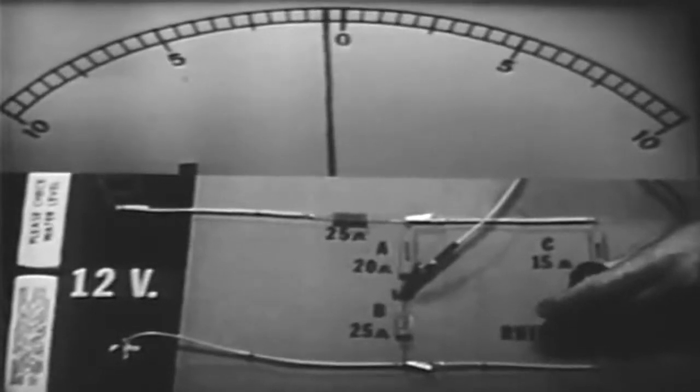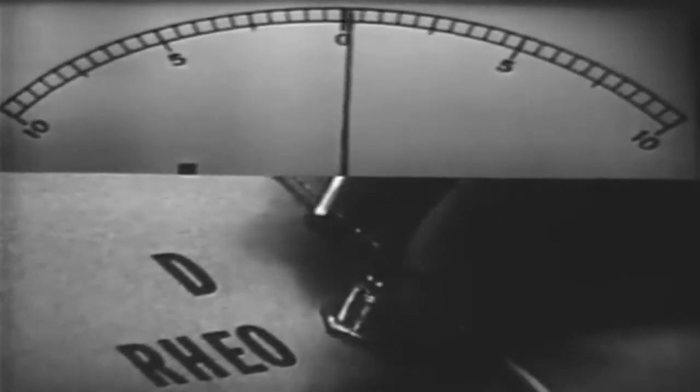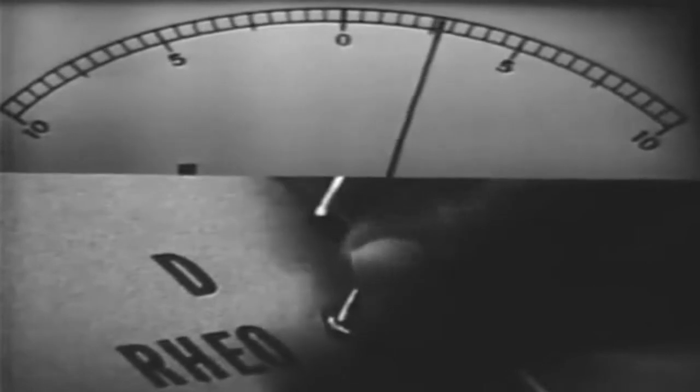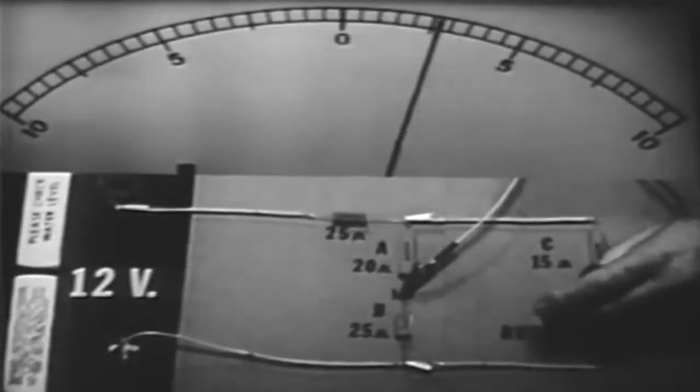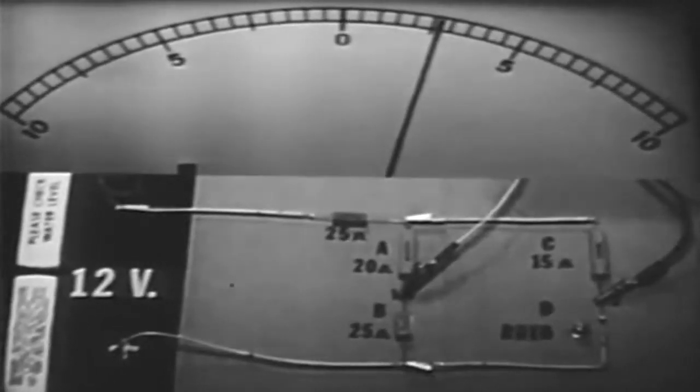By decreasing D, we can bring the circuit back to balance and unbalance it in the opposite direction. Now point 2 is more positive than point 1.